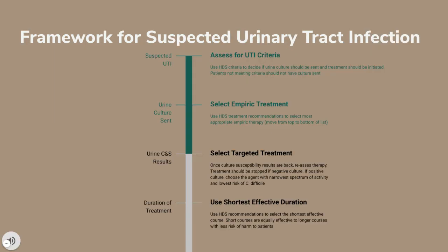Here is a framework for managing patients with suspected urinary tract infection. First, assess for symptoms — in cases where patients don't meet criteria, we don't want to move further down this path, because it is really hard to ignore a positive urine culture once it comes back. Second, in patients who meet the criteria, send a urine culture and it is reasonable to start empiric treatment using local guidelines. Third, once culture results come back, if negative you can safely stop therapy; if positive, use the narrowest-spectrum agent possible. Finally, select your duration of treatment based on the best available evidence.